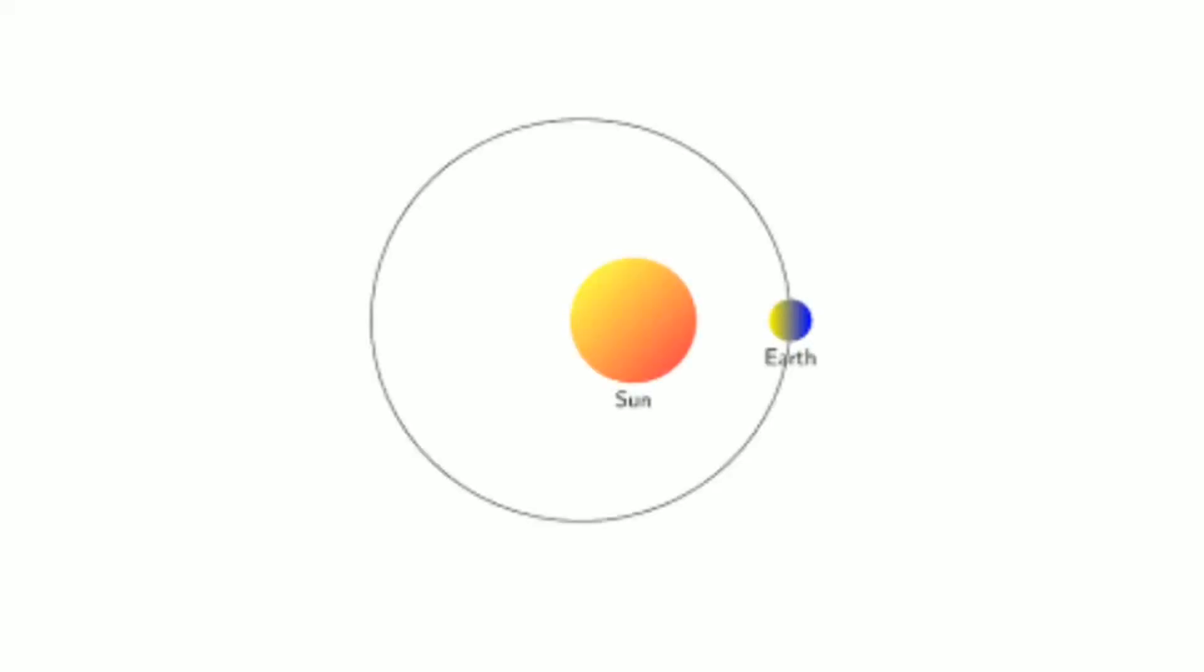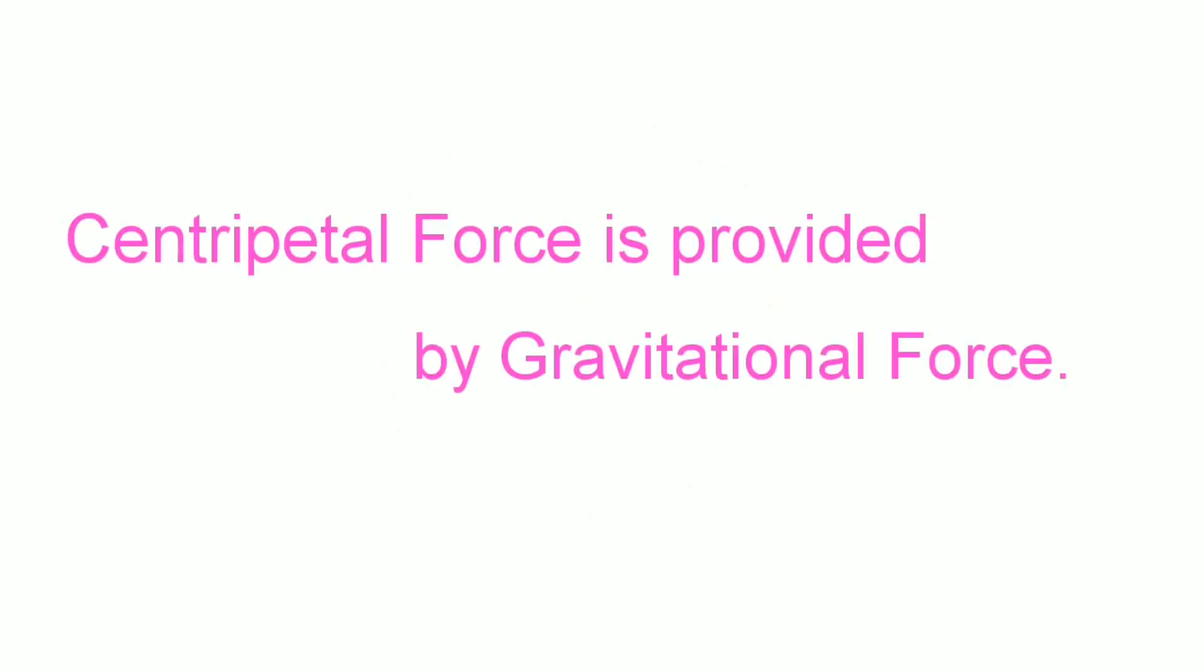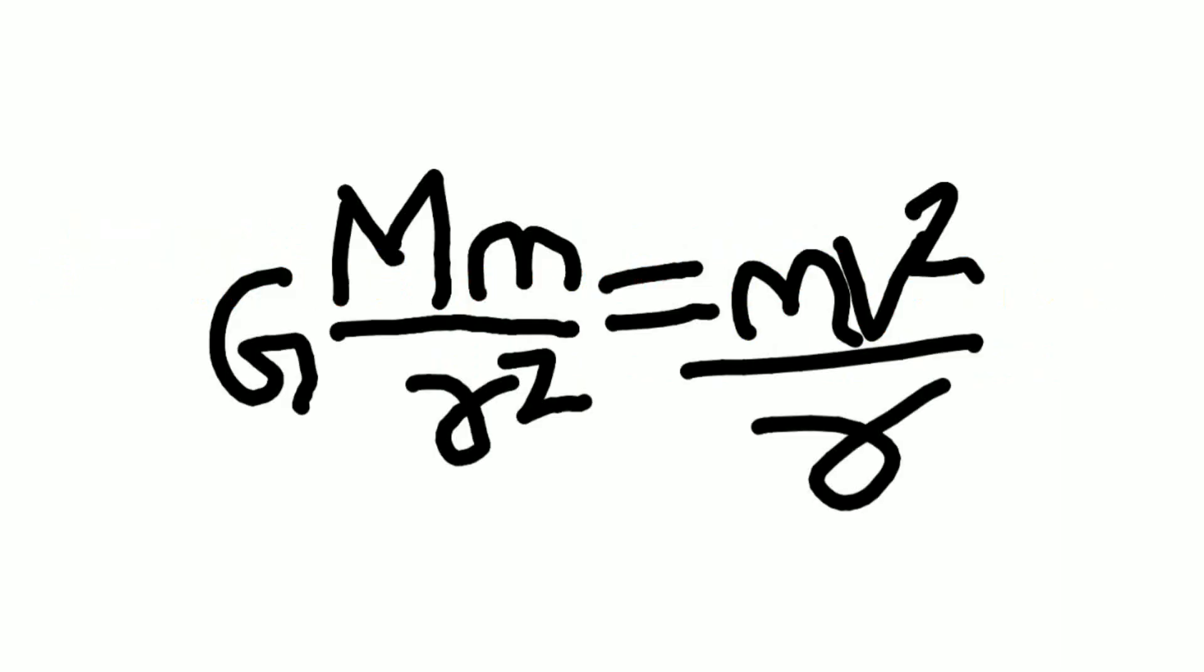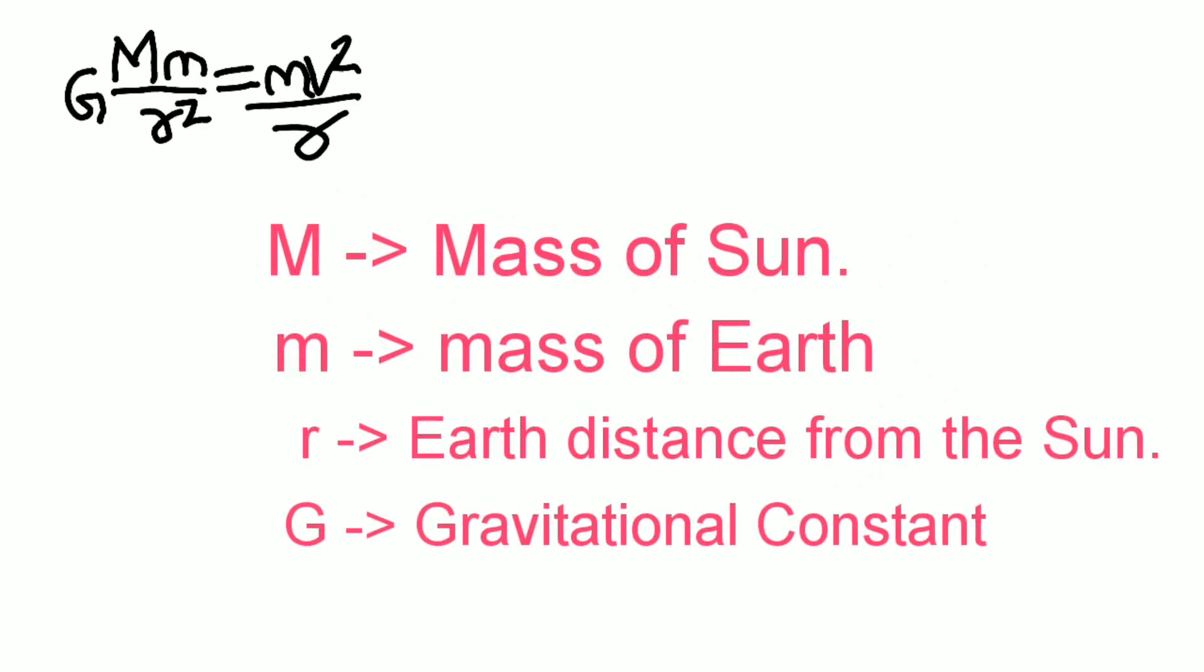Derivation. Since Earth is performing circular motion around the sun, the centripetal force is provided by the gravitational force: F_centripetal = F_gravitational. GMm/r² = mv²/r, where capital M is the mass of the sun, small m is the mass of Earth, r is the distance of Earth from the sun, and G is the gravitational constant.